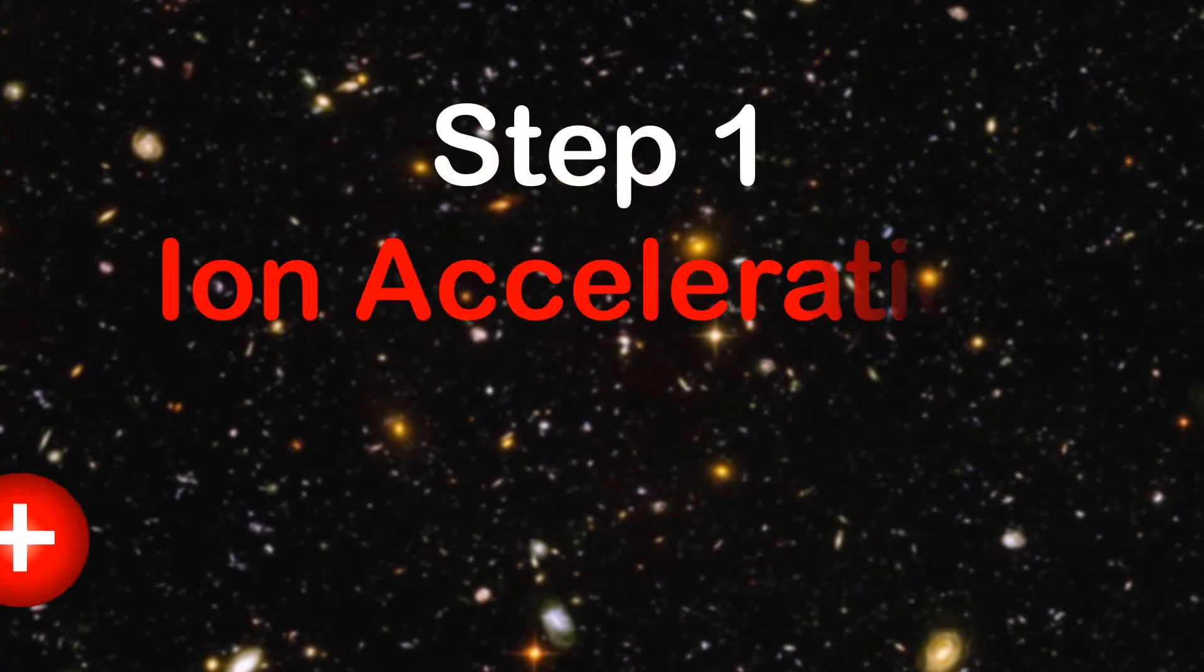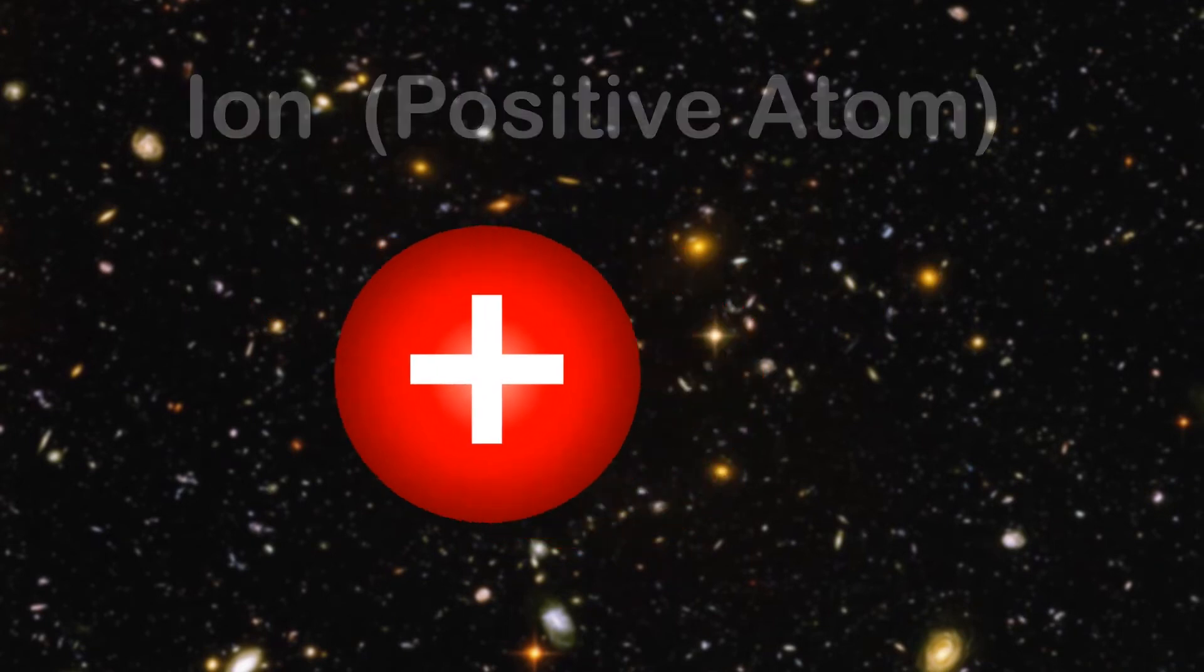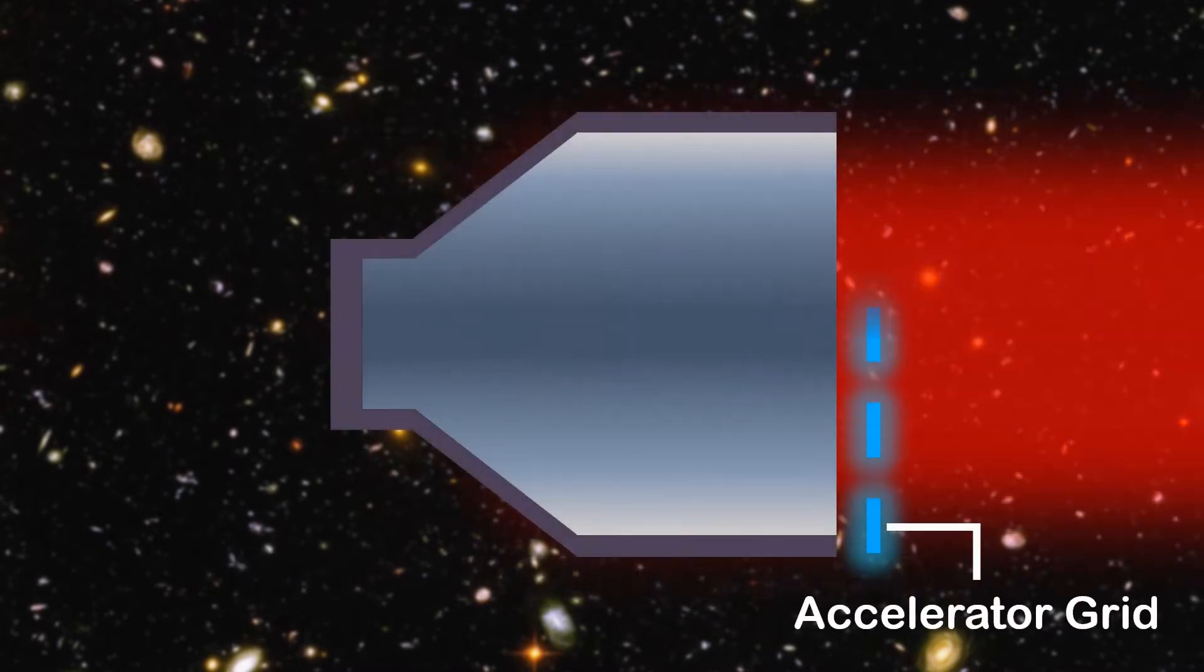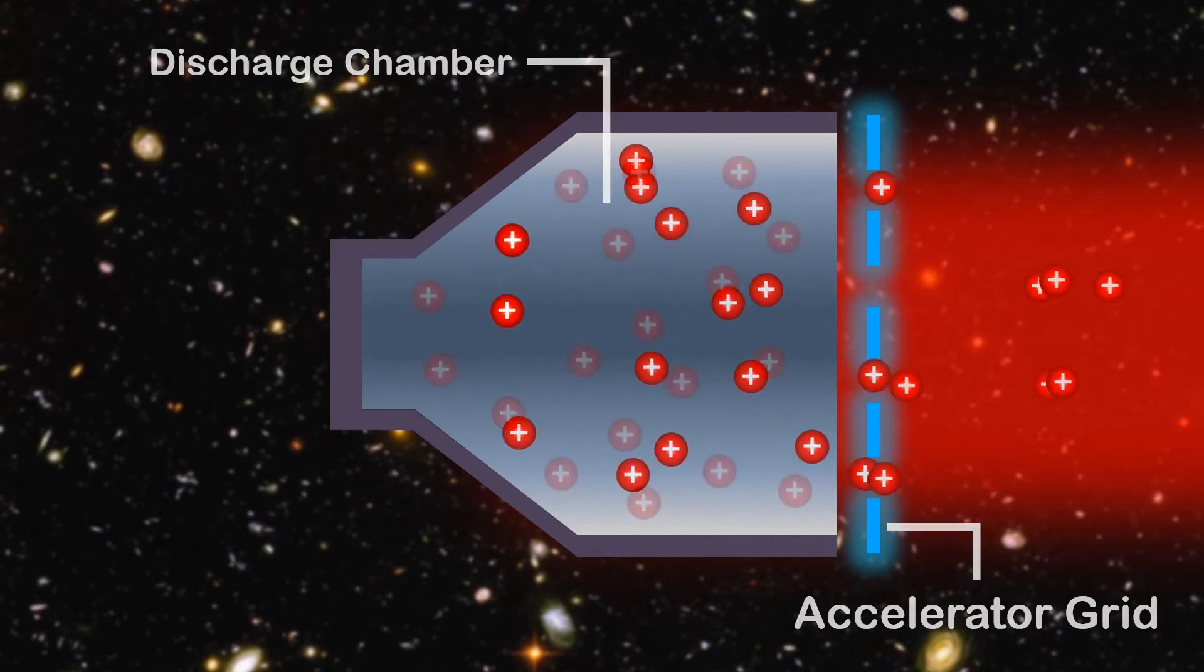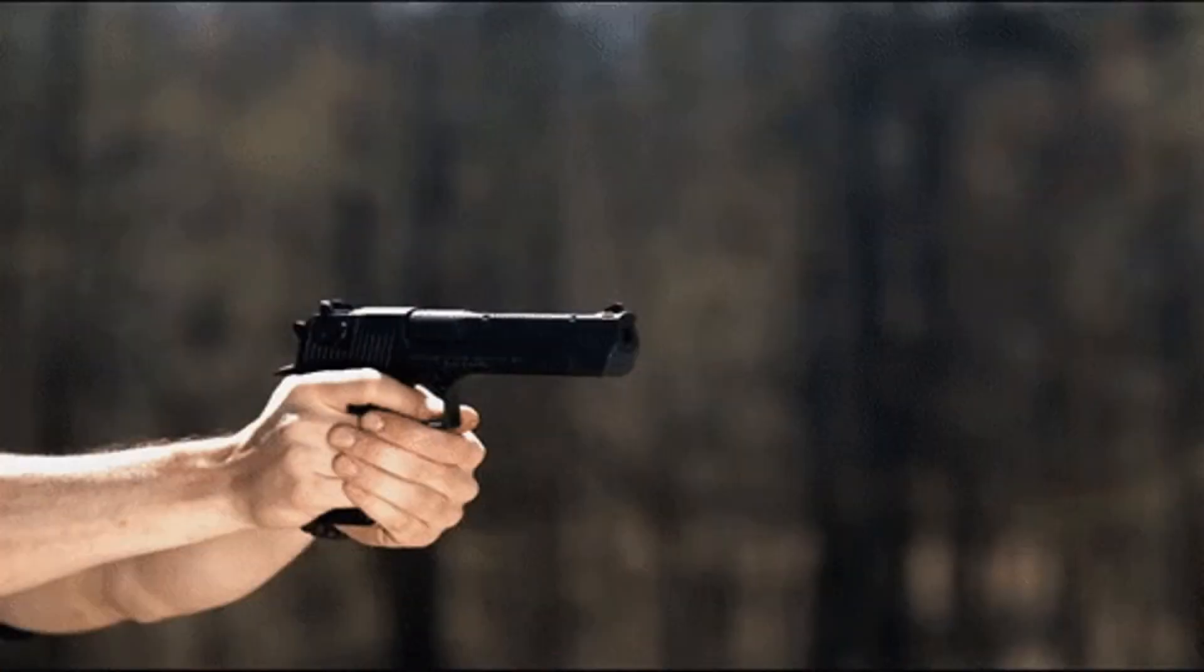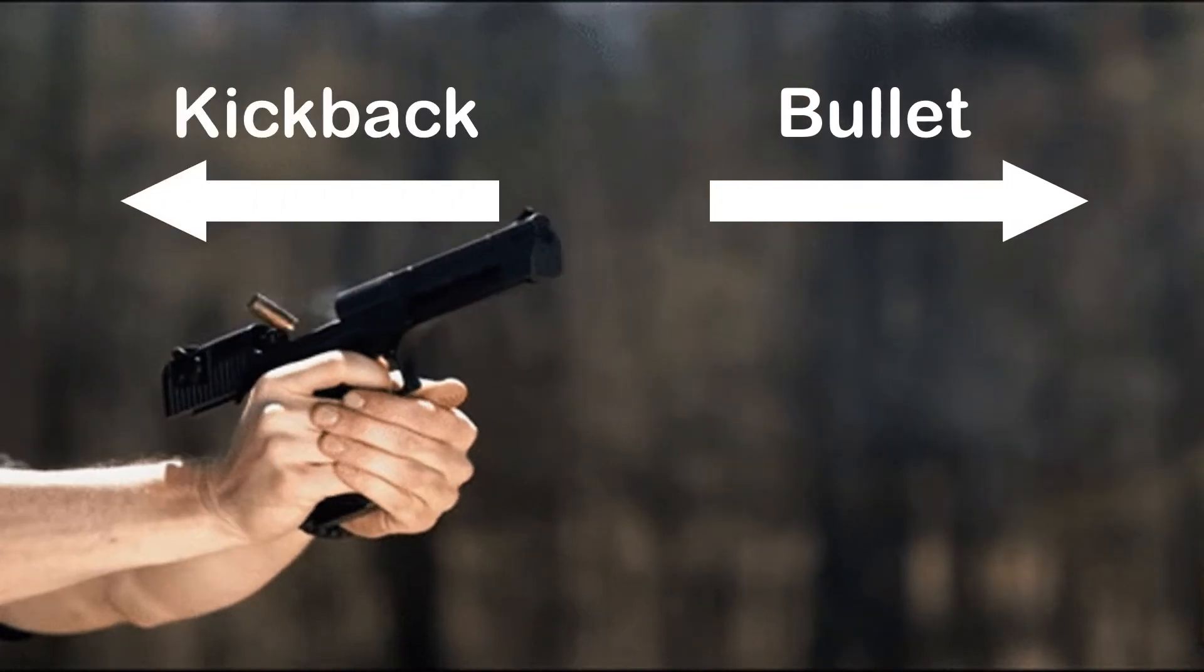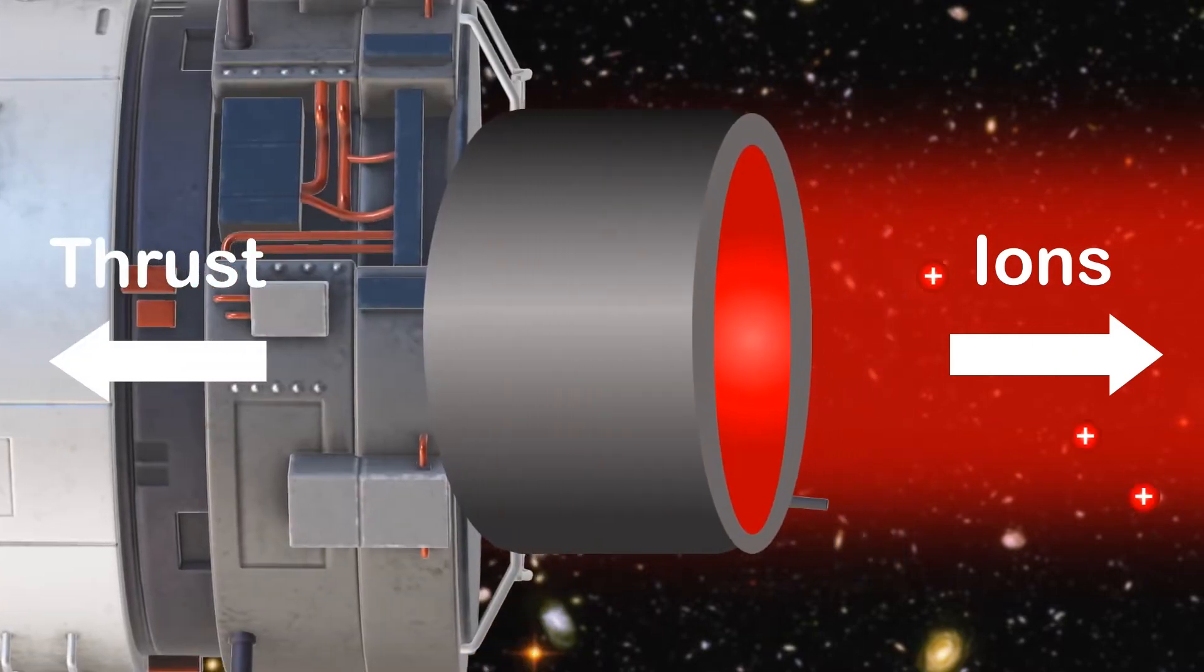Step 1, Ion Acceleration. An ion is a positively charged atom. Positive things are attracted to negative things through the electrostatic force. Gridded ion thrusters use a negatively charged accelerator grid to attract positive ions from inside the discharge chamber. The ions then leave the thruster at speeds of up to 50km per second, over 100 times faster than a bullet. And for the same reason that firing a bullet produces kickback in the opposite direction, firing ions at these enormous speeds produces thrust in the opposite direction.